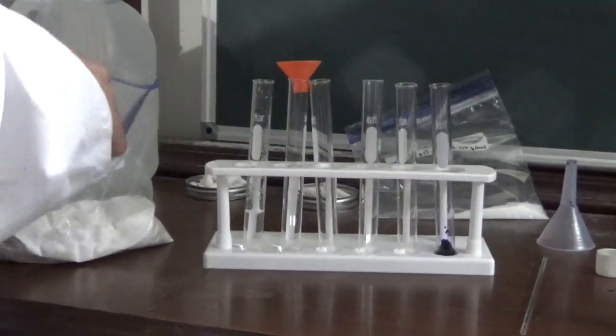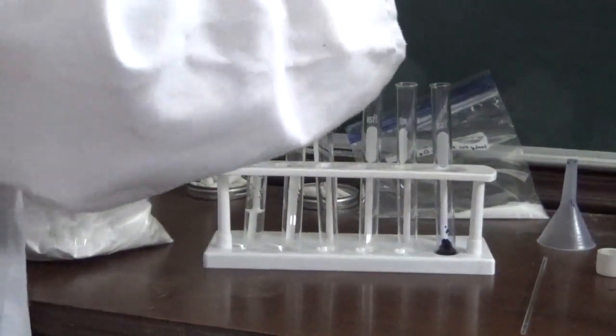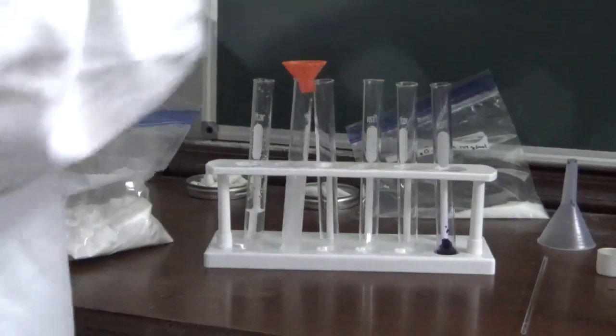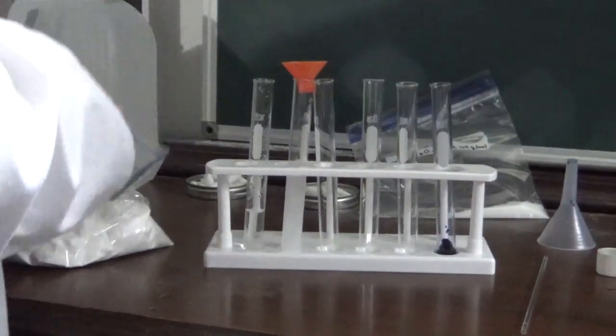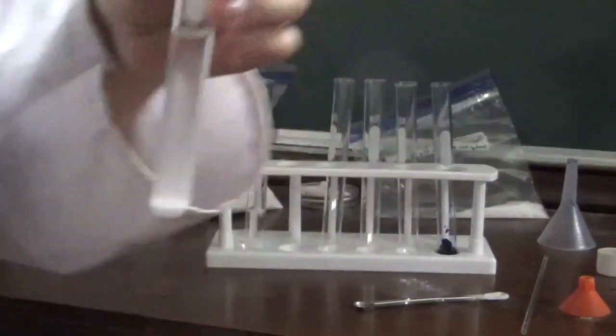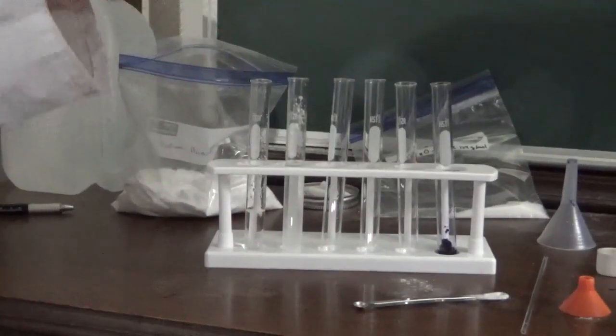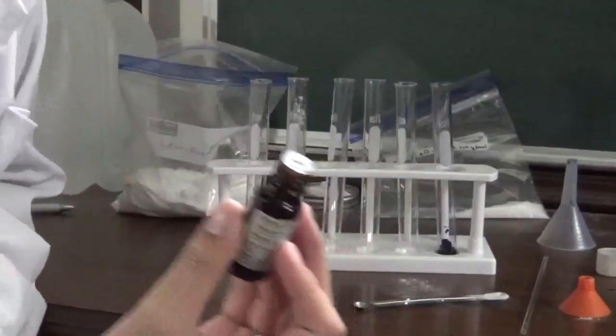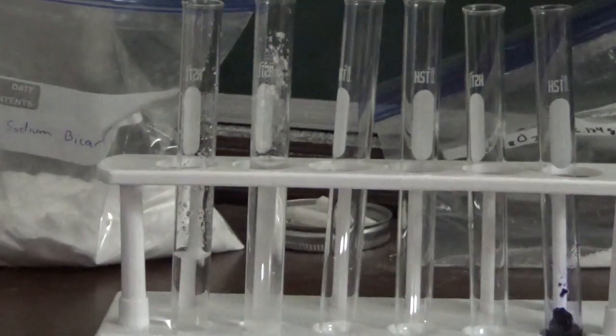So to this second beaker we are going to simply just add a few spoonfuls of baking soda. Now I'm not really measuring perfectly here. I don't really care. I just need some baking soda dissolved in some water. All right, there we go. So this is our basic solution, and this is our acidic solution.